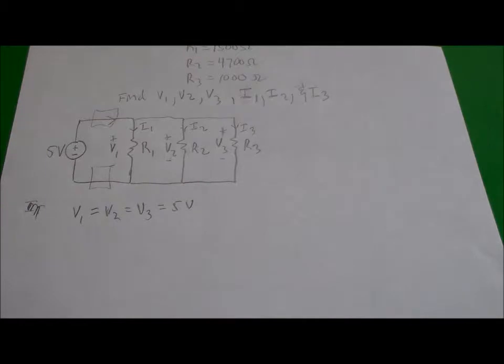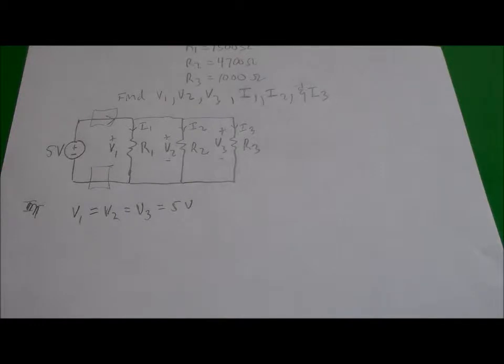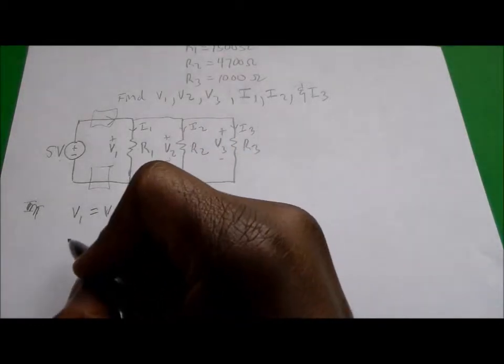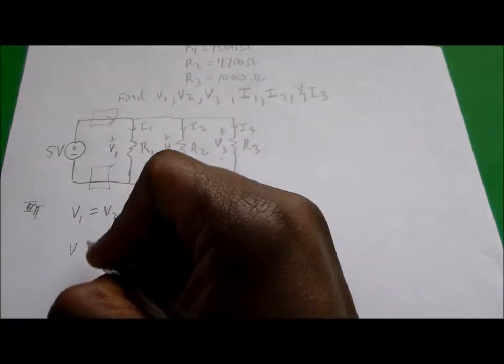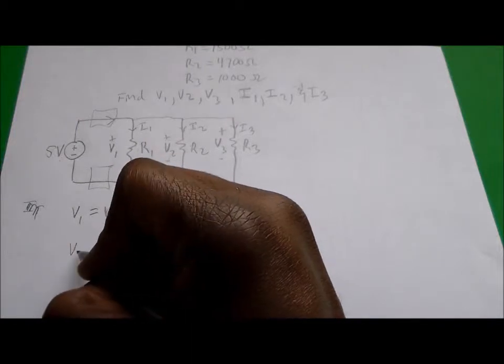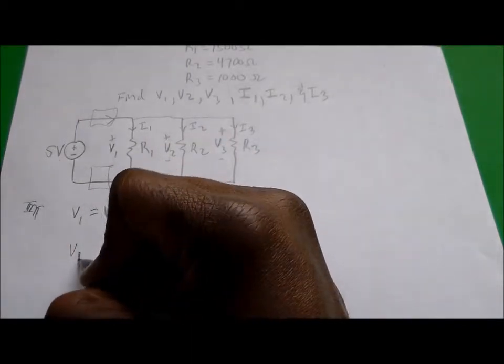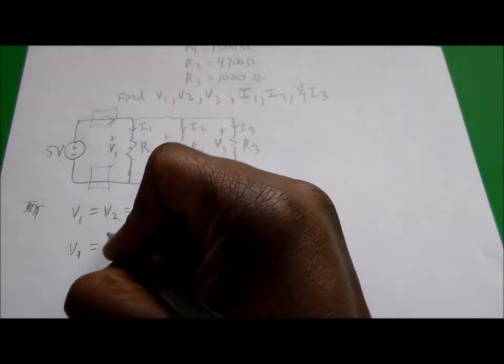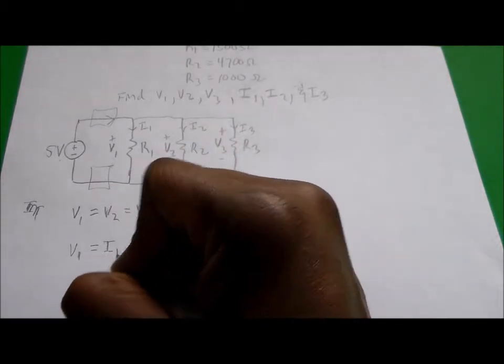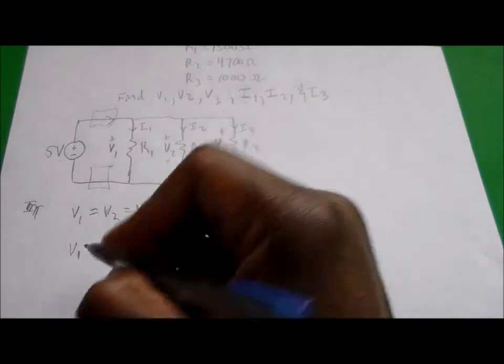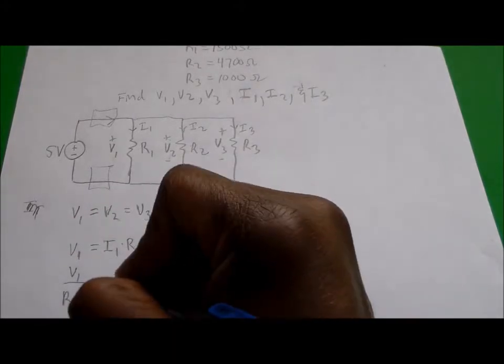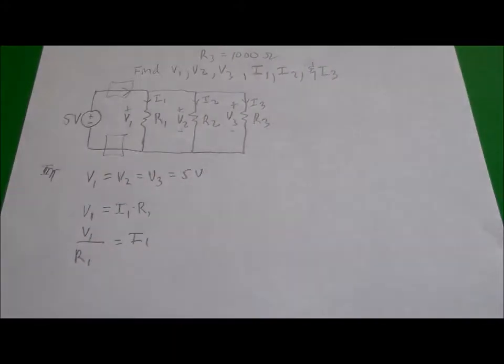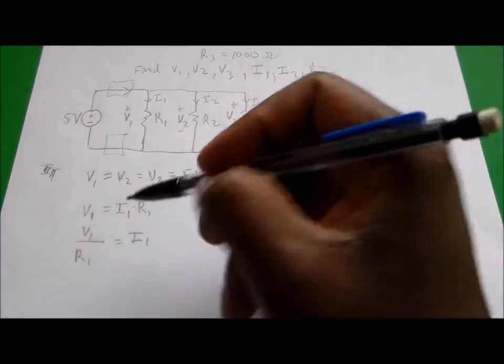If we're looking to find what current is going through all those resistors, we use Ohm's law: V equals IR. So V1 equals I1 times R1. If we're looking for the current, then V1 divided by R1 is going to give us I1 based on Ohm's law.